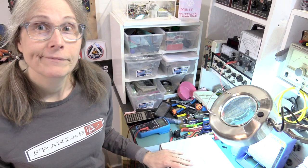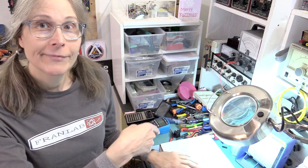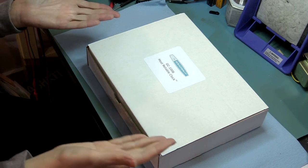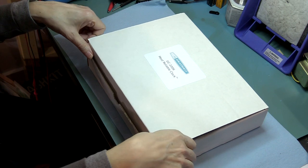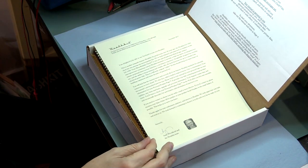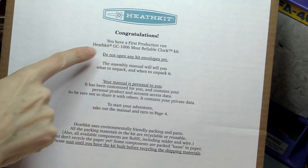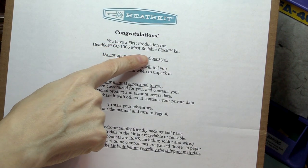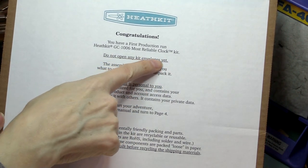But let's get to this one. Who knows what's going on at the new Heathkit, but they do have a clock kit. So let's get right into it. All right. Well, here it is. The box. I bought this last year. Congratulations, you have a first production run Heathkit GC 1006 Most Reliable Clock Kit.